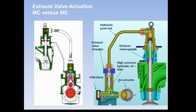This is the servo oil line. The oil is called servo oil, which is pressurized by the hydraulic power system at 200 bar. This hydraulic power system consists of an axial piston pump that pressurizes the oil to 200 bar. This is the hydraulic actuator through which the oil passes, and this is the high pressure line which activates the hydraulic piston to open the exhaust valve.